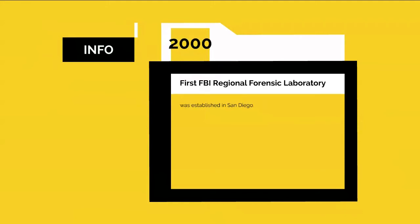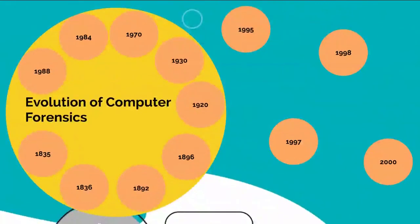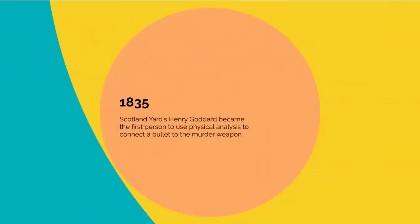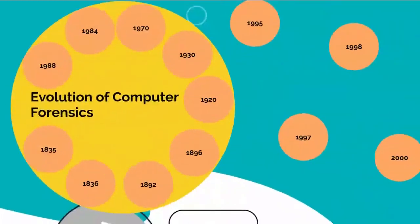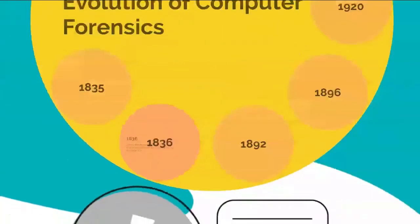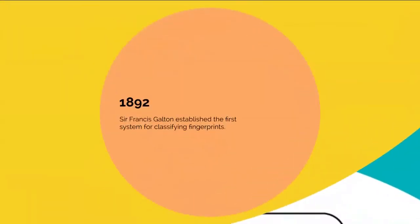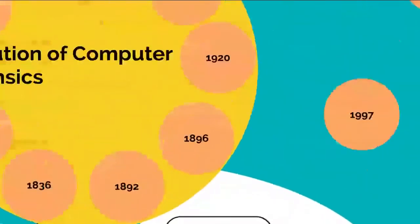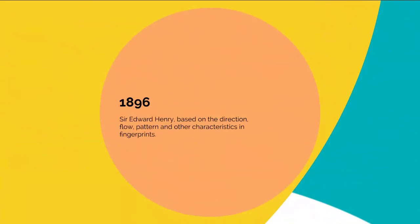Now we will present the timeline of computer forensics evolution. In 1835, Scotland Yard's Henry Goddard became the first person to use physical analysis to connect a bullet to a murder weapon. In 1836, James Marsh developed a chemical test to detect arsenic, which was used during a murder trial. In 1892, Sir Francis Galton established the first system for classifying fingerprints. In 1896, Sir Edward Henry developed a classification pattern based on the direction, flow, pattern, and other characteristics in fingerprints.